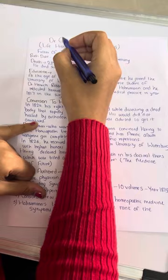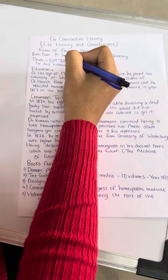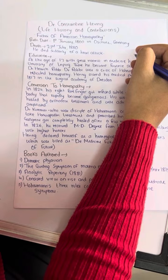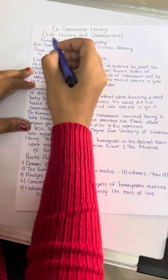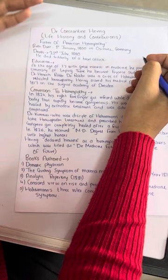Understanding about Dr. Constantine Herring, what is the most important thing to be remembered? He is the father of American homeopathy. Who is the father of American homeopathy? The answer is Dr. Constantine Herring. To make this video very simplistic, we are dividing it into birth date,